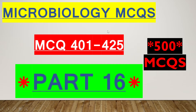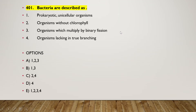The first question: bacteria are described as (1) prokaryotic unicellular organisms without chlorophyll, (2) organisms which multiply by binary fission, (3) organisms lacking in true branching, and (4) additional options. The right answer is option E — one, two, three, four — all options are correct according to bacteria.